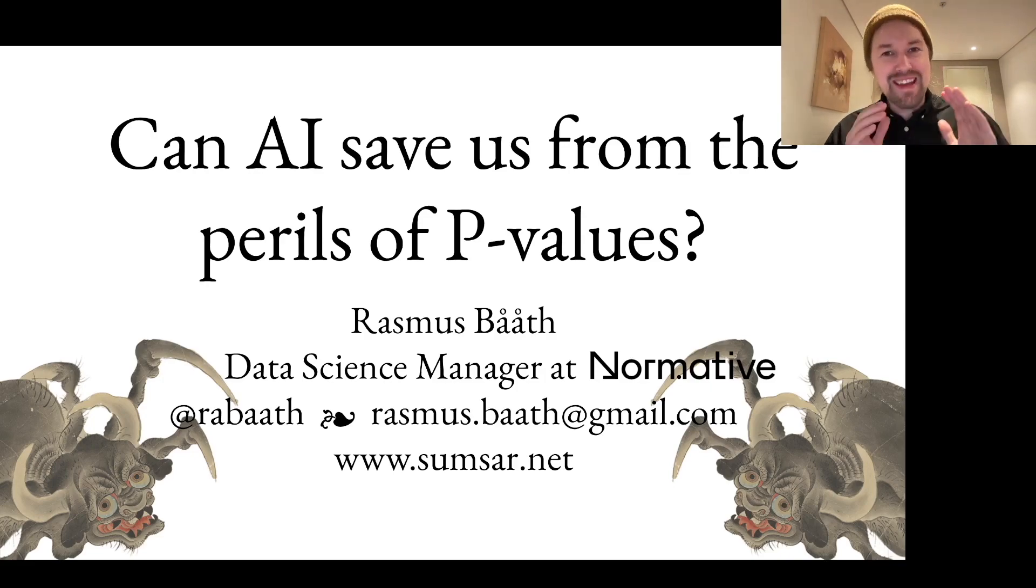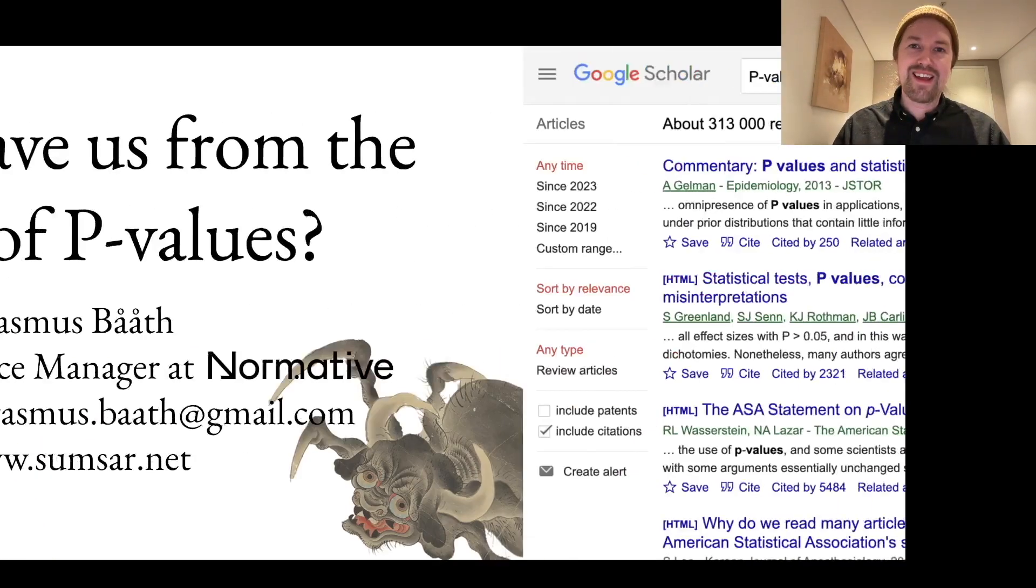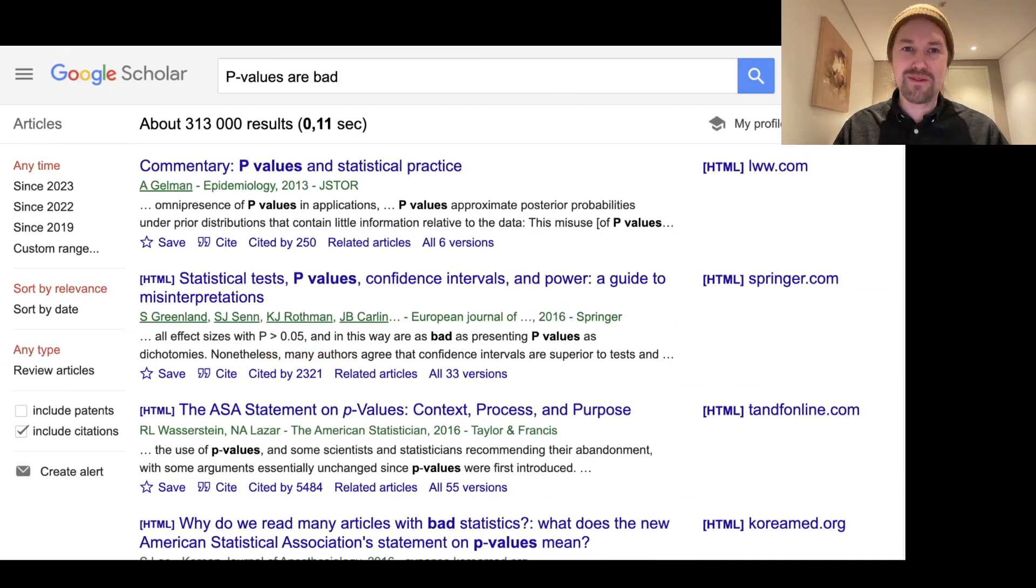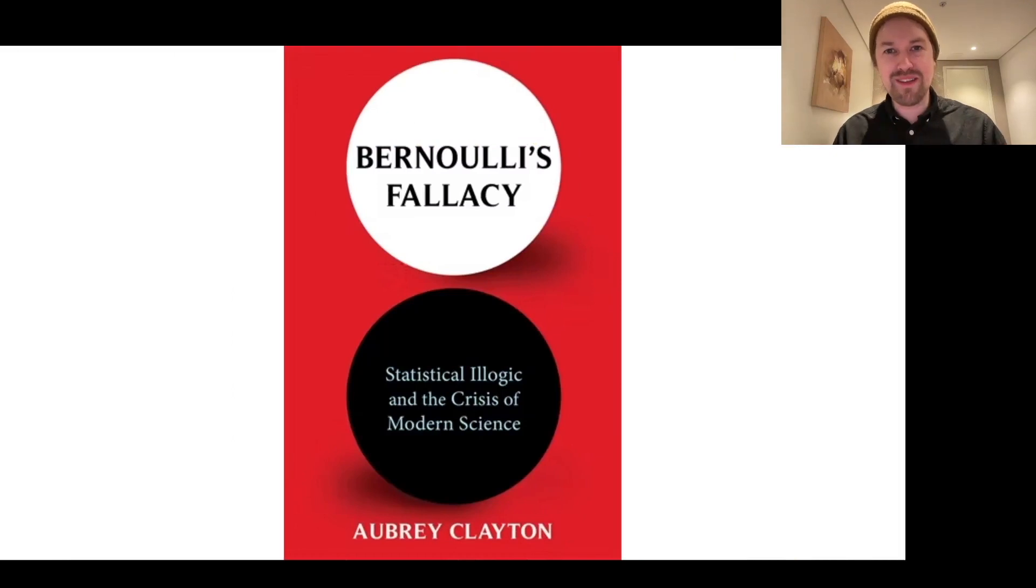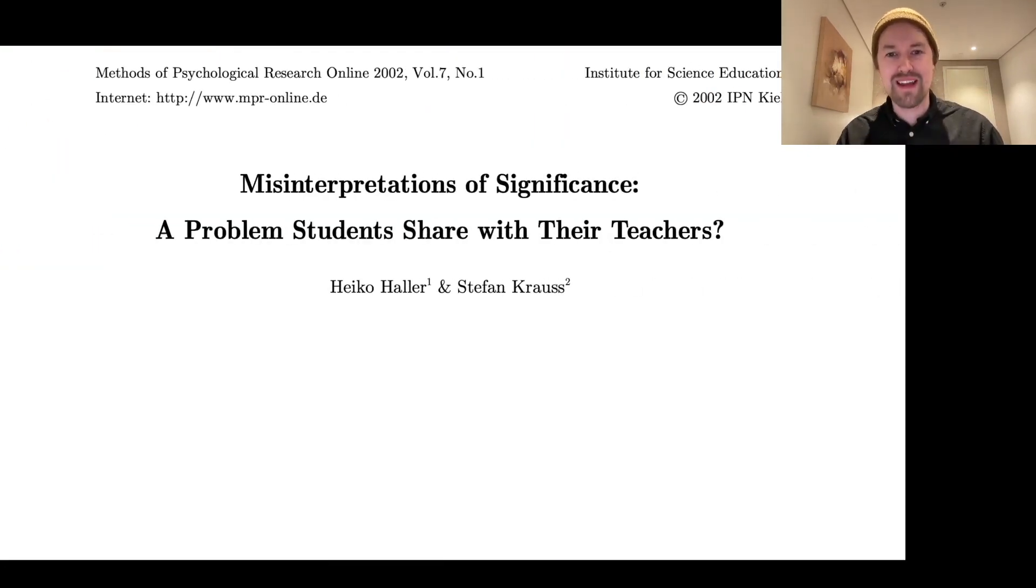So p-value bashing, yes, many people have written about the many, many problems with p-values. Some people have even written whole books about it, such as this awesome book by Aubrey Clayton. However, one of my favorite small articles centered around one specific problem with p-values is this article by Haller and Krauss. So it focuses on the problem with p-values that they are so hard to get right and so easy to misinterpret, even for people that should know better. Its name is Misinterpretations of Significance, a problem students share with their teachers. Spoiler alert, yes, but we get to that.